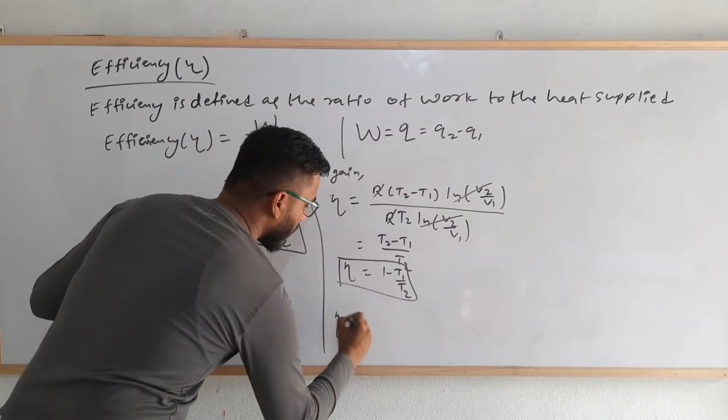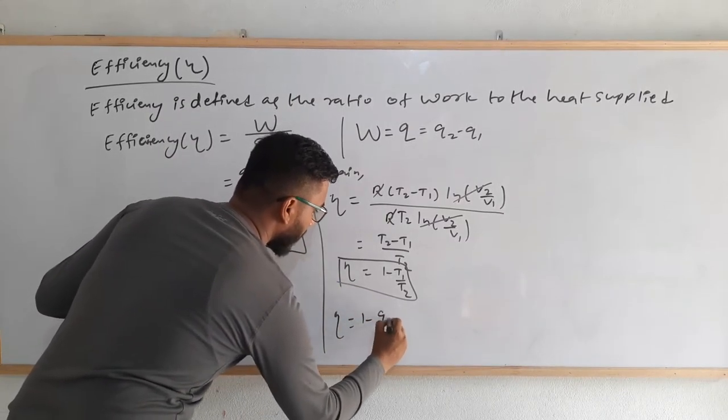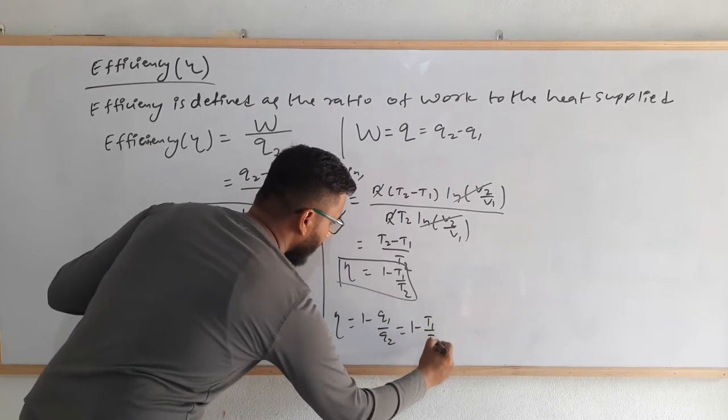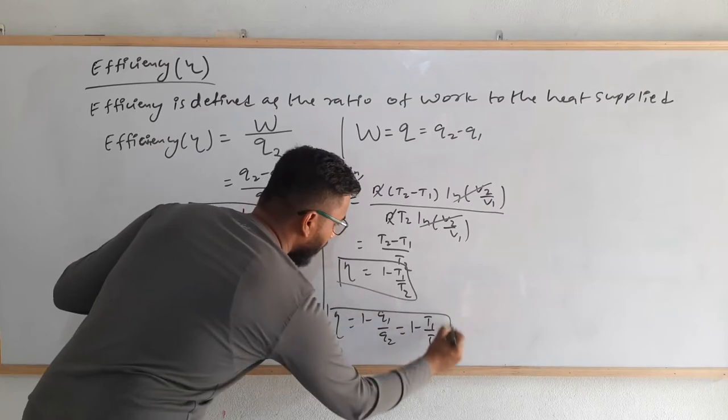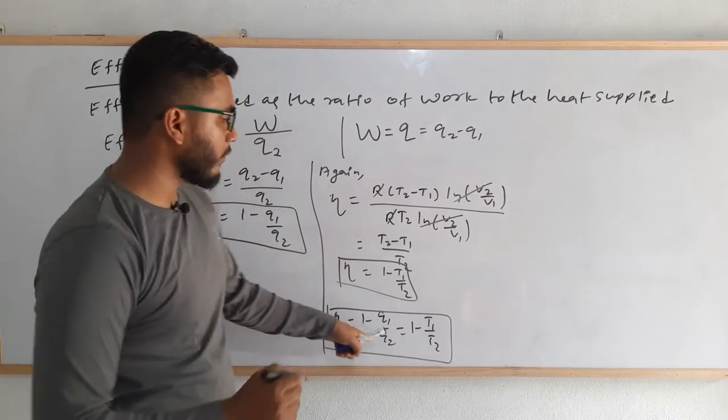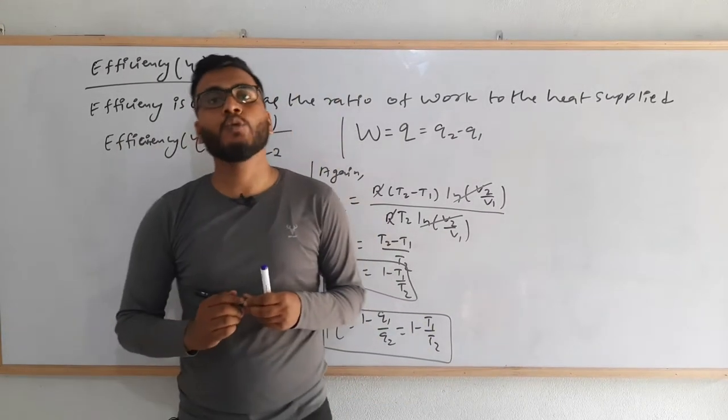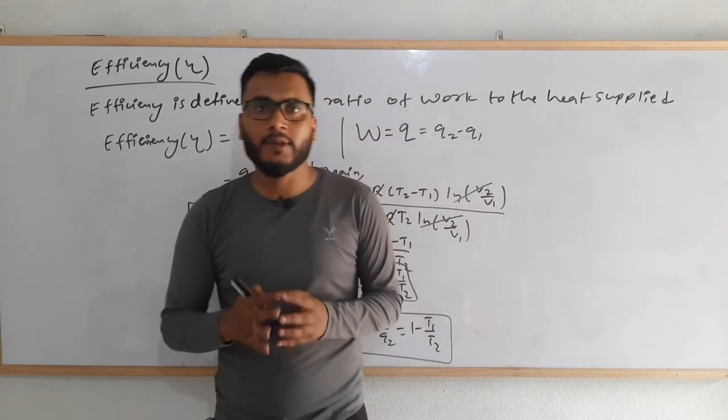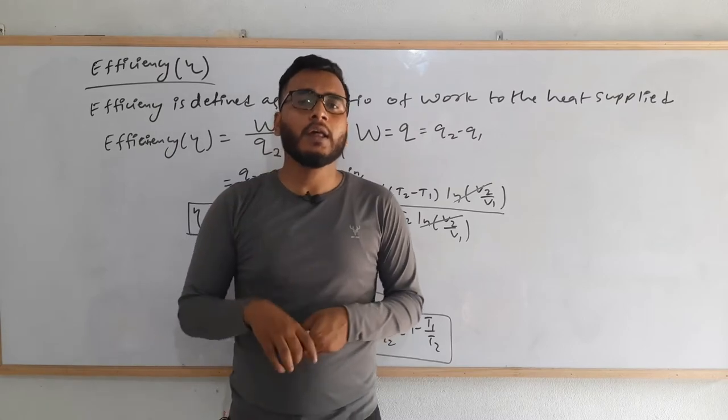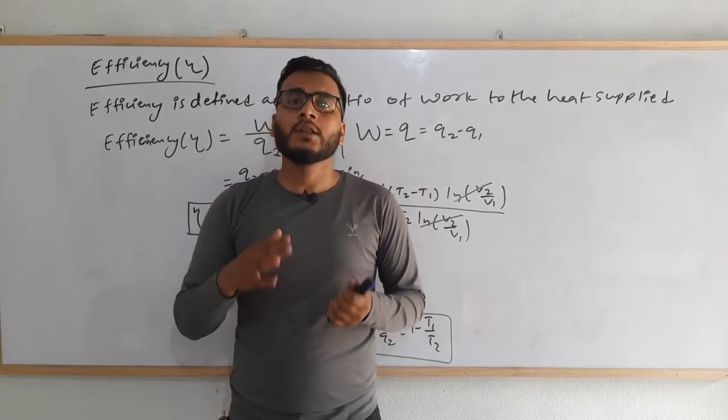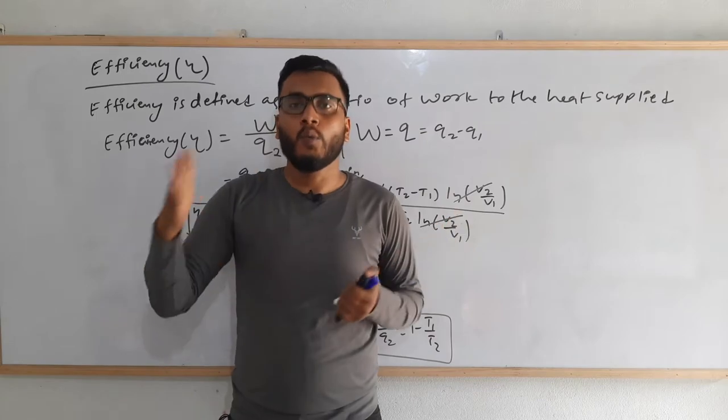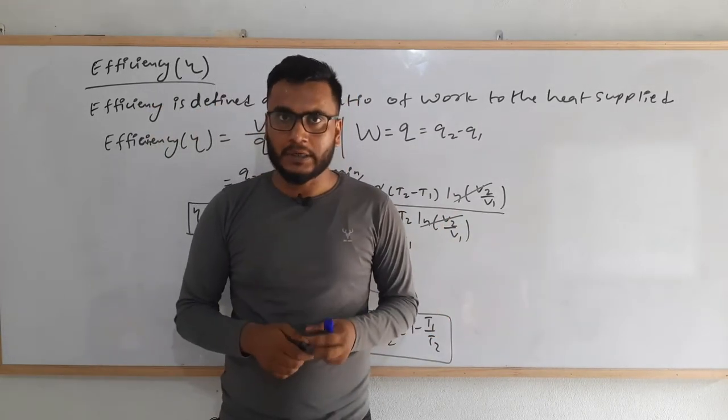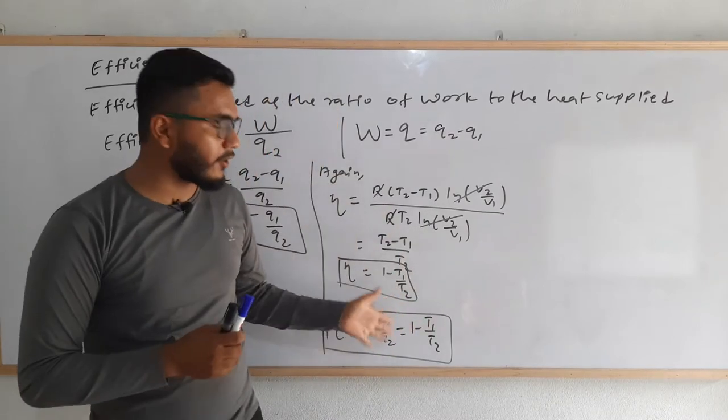This is another formula to calculate the value of efficiency. You can simply write eta is equal to 1 minus Q1 by Q2, and that is also equal to 1 minus T1 by T2. From here you can establish the relation between Q1, Q2, T1, T2 as well. If the value of efficiency is more, that is better for us because the machine has converted more heat into work. This depends on temperature as well.